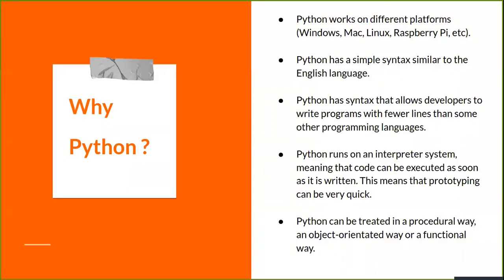Finally, why Python? Why should you use Python? Python works on different platforms — Windows, Mac, Linux, Raspberry Pi, and more. Python has a simple syntax similar to the English language. Python syntax allows developers to write programs with fewer lines than some other programming languages. Python runs on an interpreter system, meaning code can be executed as soon as it is written, making prototyping very quick. Python can also be treated in a procedural way, an object-oriented way, or a functional way. These are some of the basic features that let a programmer choose Python over any other language.